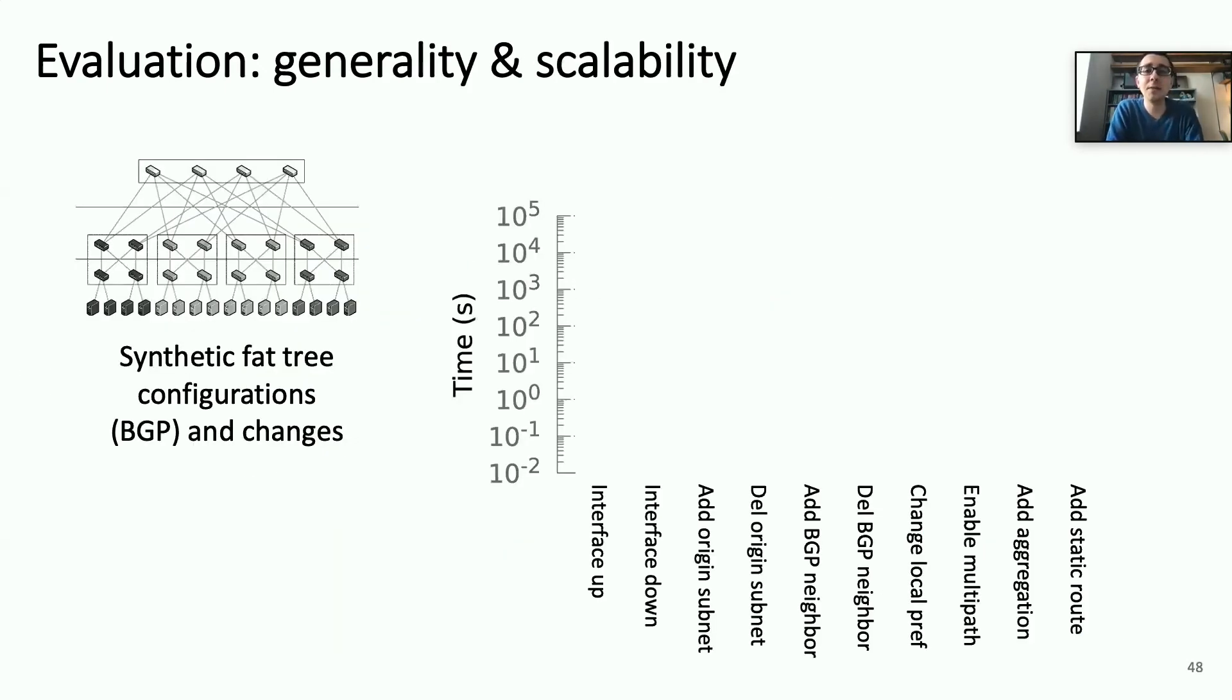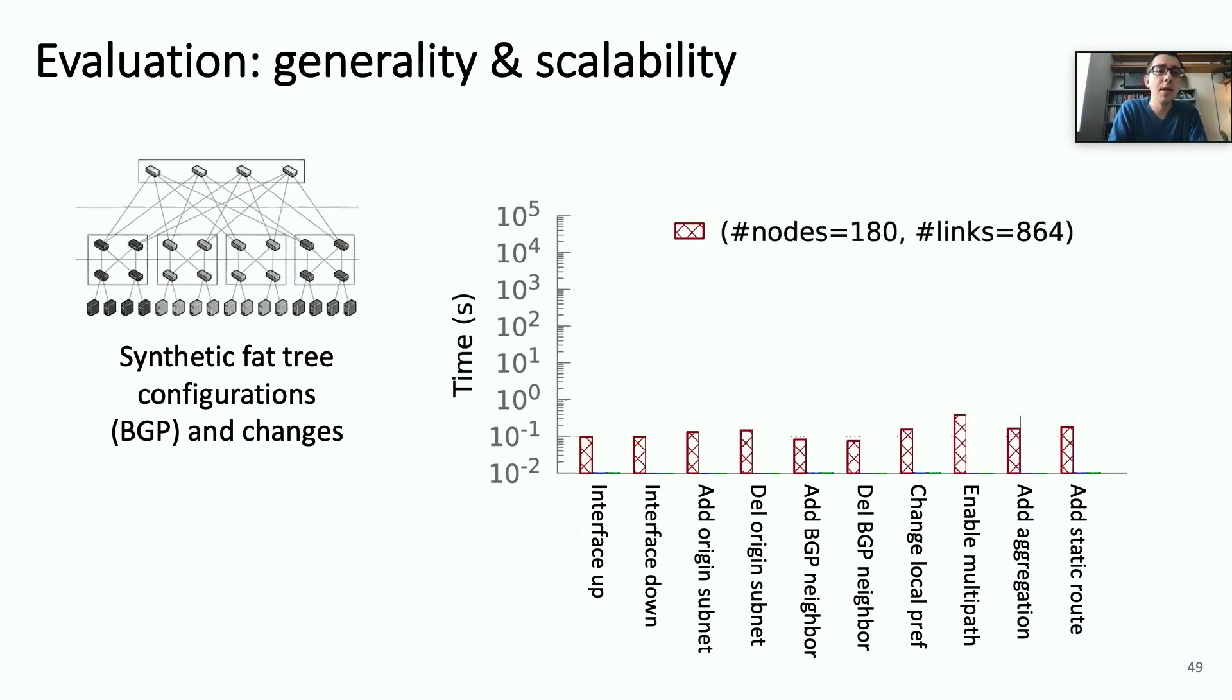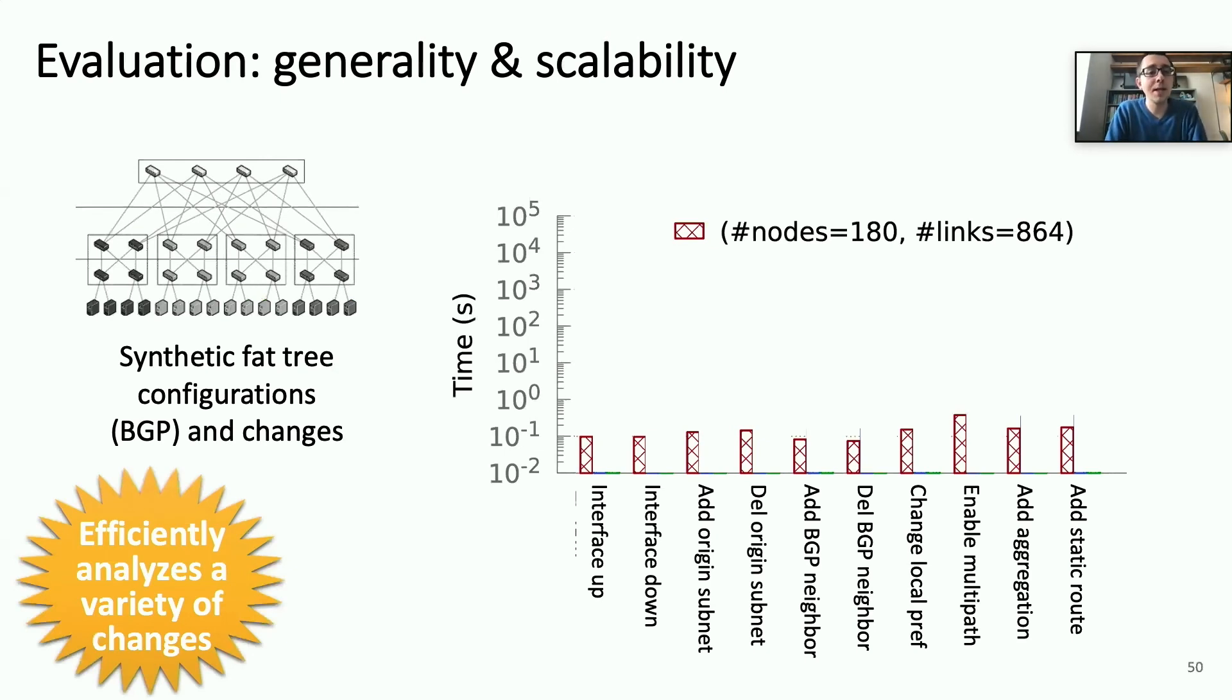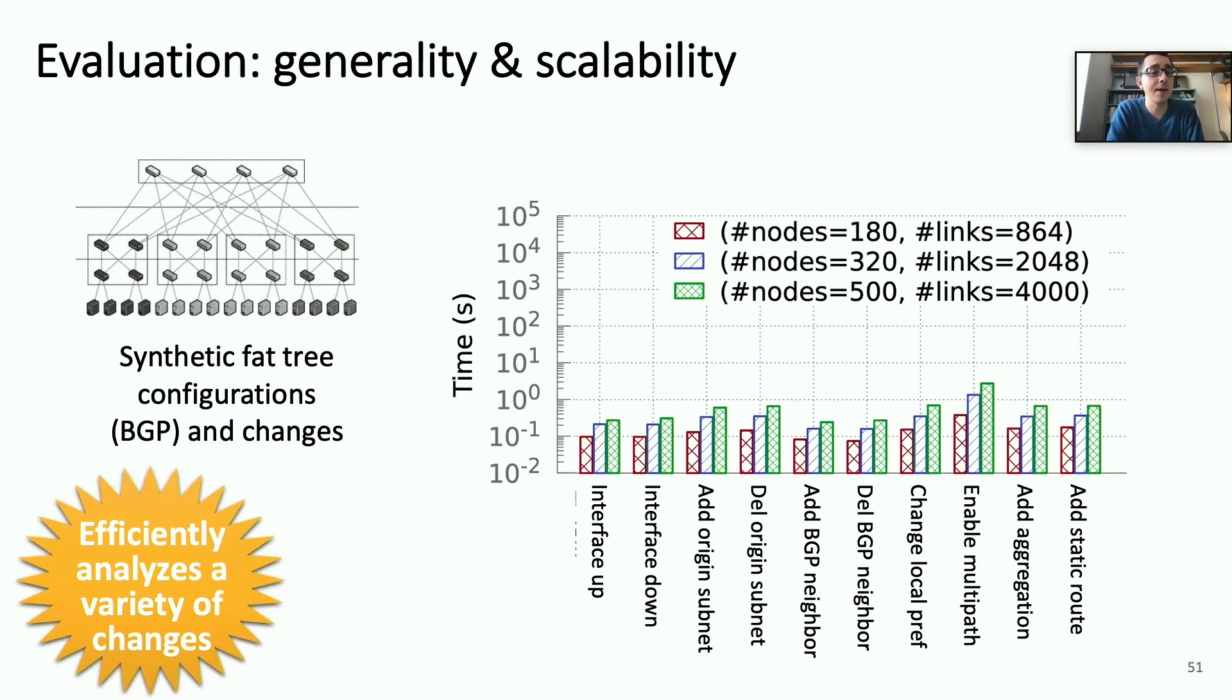Finally, we use synthetic factory configurations to evaluate DNA's generality and scalability. Particularly, we look at a variety of changes to these configurations, ranging from taking interfaces up and down to enabling aggregation or adding static reps. And we can see that across all these different types of changes we see with a 180 node factory network that DNA has reasonable performance. We're talking in the hundred or hundreds of milliseconds range for all of these different types of changes. So we know that DNA can efficiently analyze a variety of changes. We also look at factories of different sizes, from 180 all the way up to 500 different routers. And again, we see that DNA's performance scales reasonably well as the size of the network increases.